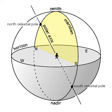On any given sidereal day or night, a celestial object will appear to drift across, or transit, the observer's upper meridian as Earth rotates, since the meridian is fixed to the local horizon. At culmination, the object contacts the upper meridian and reaches its highest point in the sky. An object's right ascension and the local sidereal time can be used to determine the time of its culmination.